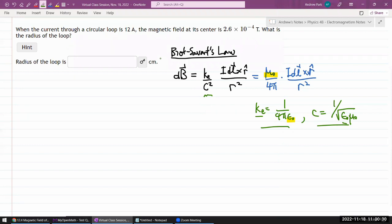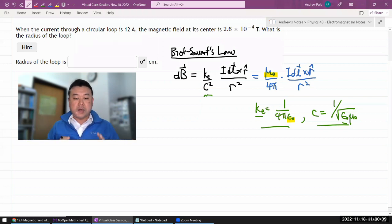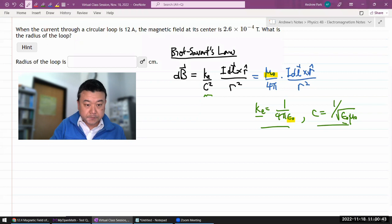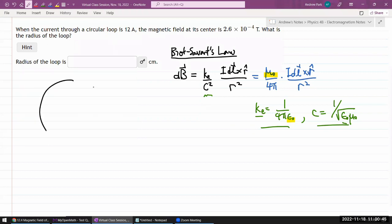So with this Biot-Savart's law, we can derive this right now. Let me draw the loop. Let me imagine the view where I'm looking at the loop from the top. So I have a loop like this in a circle. This is my circular loop.